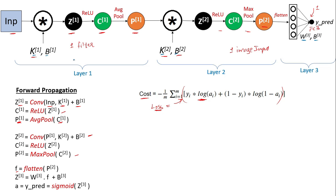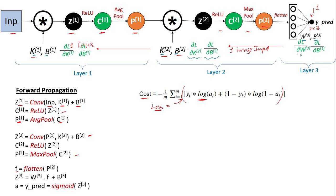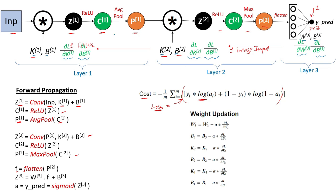Our parameters are W3, B3, K2, B2, K1, and B1. We need to update these parameters to minimize the error and get better predictions. To do that we need to find del L by del W3, del L by del B3, del L by del K2, del L by del B2, del L by del K1, and del L by del B1. Our goal is to obtain these gradients by propagating backwards and then apply the weight update equation: W3 = W3 minus alpha times del L by del W3, and similarly for all others.